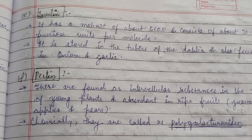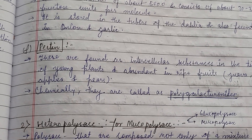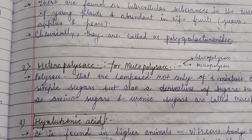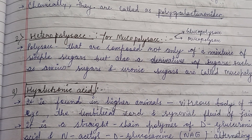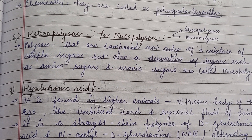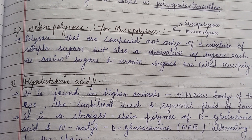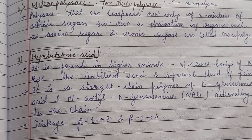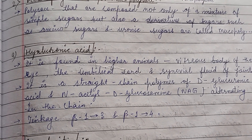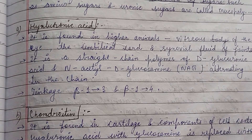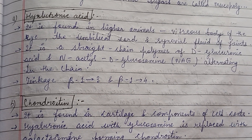Inulin and pectin are also examples of homopolysaccharides. Heteropolysaccharides are composed of sugars, and in addition to sugars, they also contain derivatives such as amino sugars and uronic or iduronic sugars.